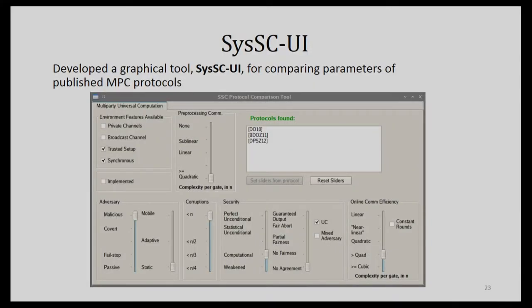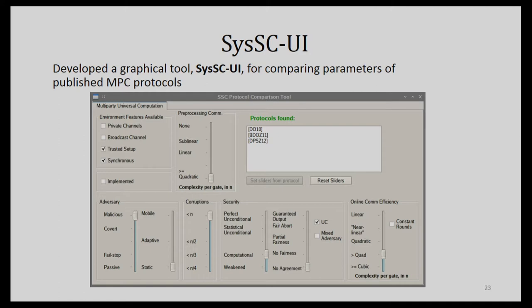We made a little tool where you can slide axes up and down, check some boxes, and see a list of papers with protocols that satisfy those definitions. This sort of thing is impossible to keep up to date because research moves so fast, but we hope it could still be useful — it tells you when you're trying to do something that's impossible and could potentially point you in the right direction.